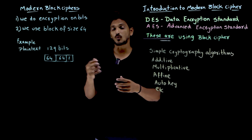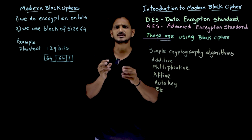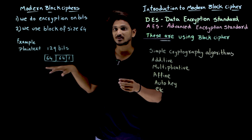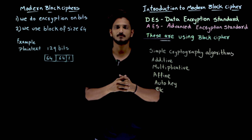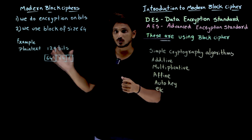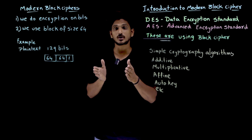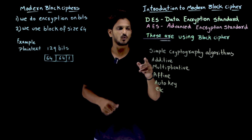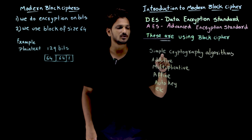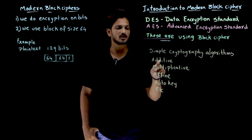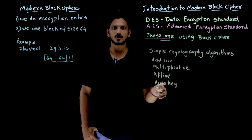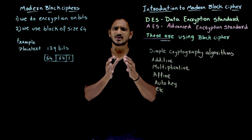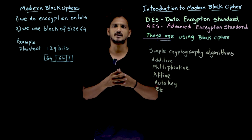In our last classes, what did we discuss? Simple cryptography algorithms have been discussed in our previous classes. Please watch all those classes because it is very important to understand the concept. The techniques discussed in our previous class include simple cryptographic algorithms: additive, multiplicative, affine, auto key, and so on. They are very very simple to understand.